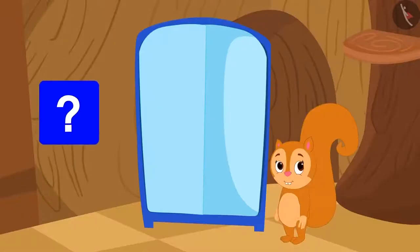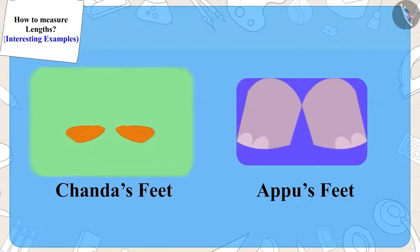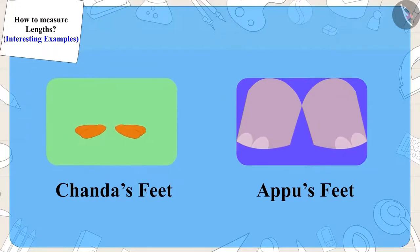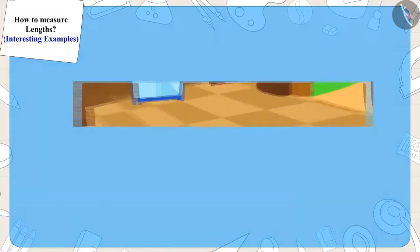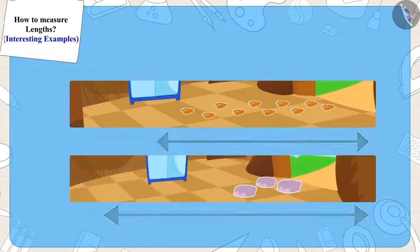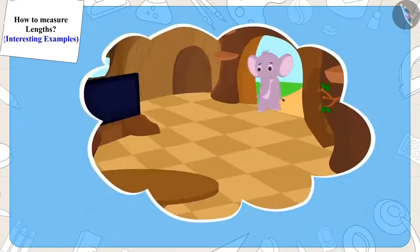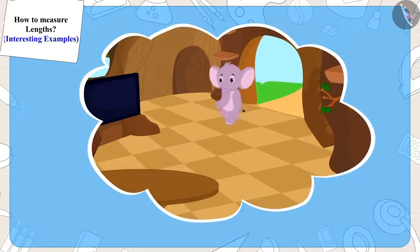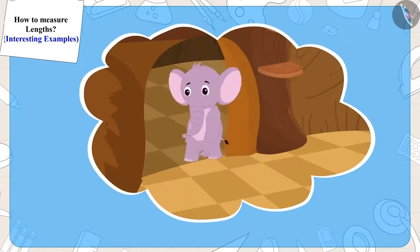Children, can you say why this happened? Actually, Chanda's feet are too small and Appu's feet are too big. This is the reason why the distance measured by Chanda — ten steps — and Appu's ten steps are not the same. So when Appu walked ten steps straight from the door, he reached the other room.